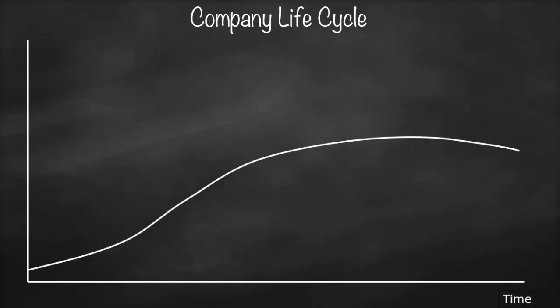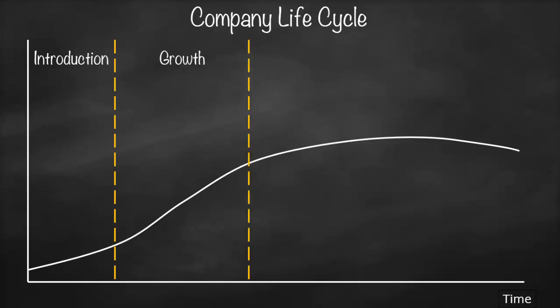For our company life cycle, the x-axis represents time. The first stage is the introduction phase, followed by the growth phase where the company grows at a very high rate, then the maturity phase where the company is stable, followed by the decline phase. Usually companies avoid the decline phase by investing in research and development and innovation, and that's why in accounting we have something called the ongoing concern, which means we assume companies will last forever.